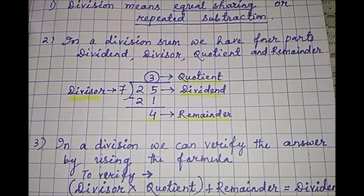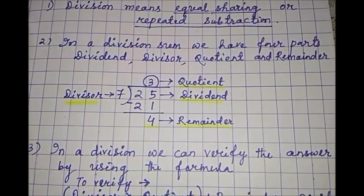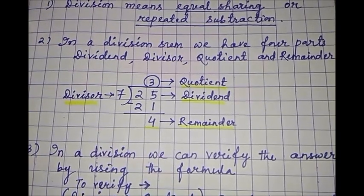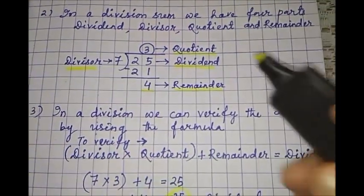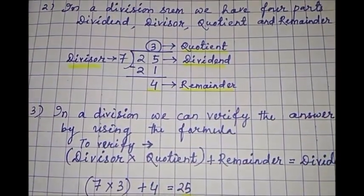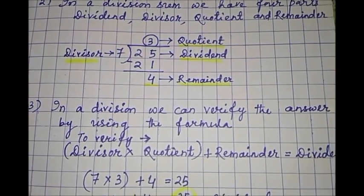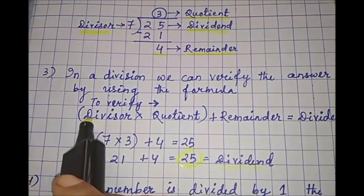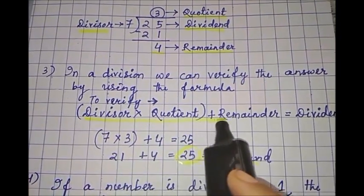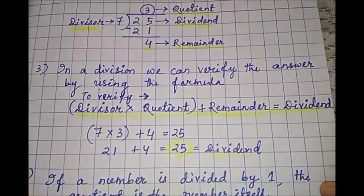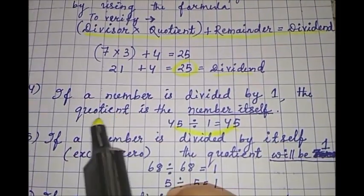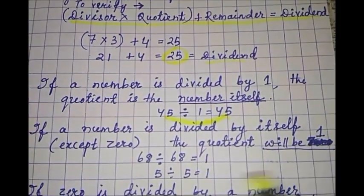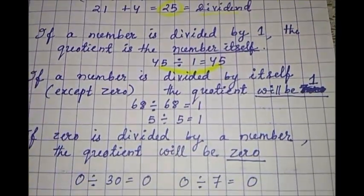So division means repeated subtraction or equal sharing. And the four parts of division sum. Then to verify, what is the verify formula? This is also very important. You should remember. And then points 4, 5 and 6.